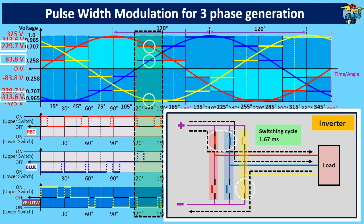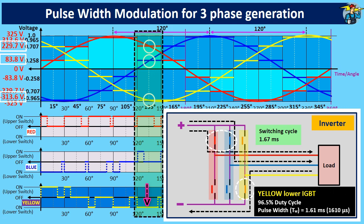Similarly, the voltage of yellow phase line is achieved using 96.5% duty cycle. Related pulse width is 1.61 milliseconds.